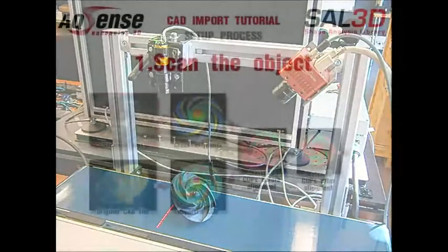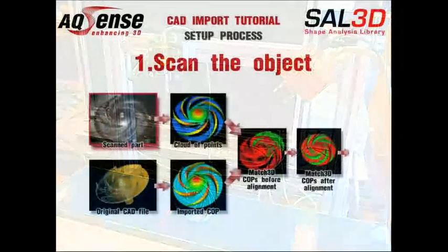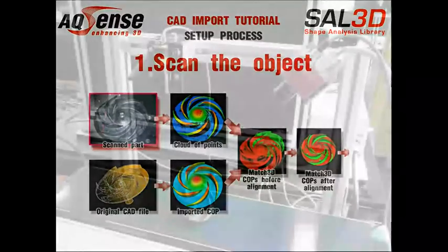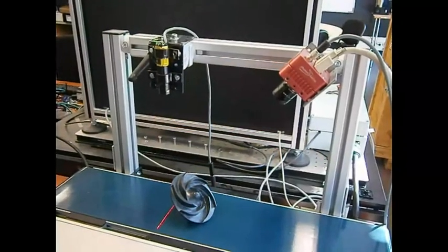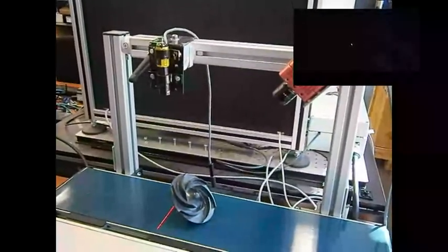To get the necessary parameters required for the quality control application, we will proceed with an initial scan of the object using our test acquisition system. As you can see, we've placed the turbine under a camera laser system with a simple 2D camera and, thanks to the PickFinder tool, we are obtaining the object's profiles in a single range map.